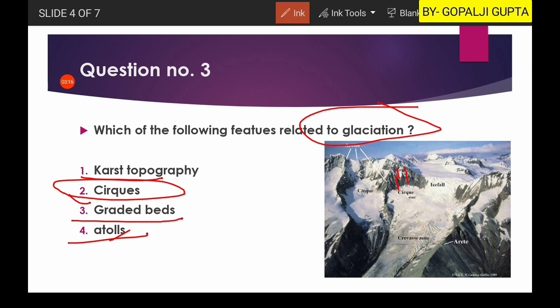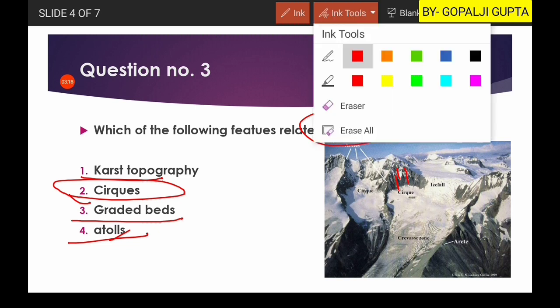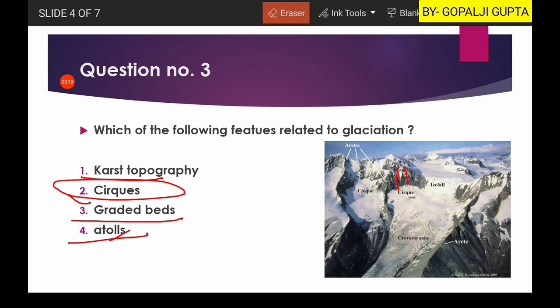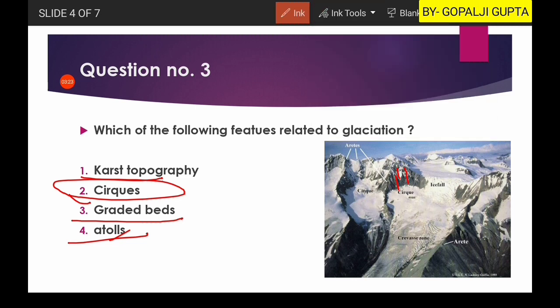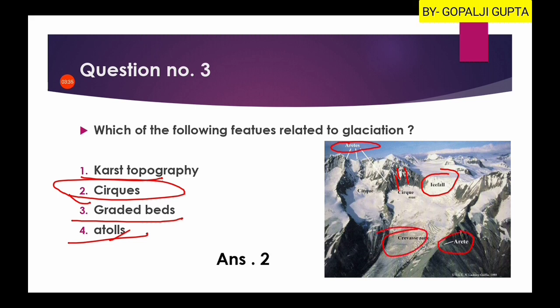You can also see other glacial features such as arêtes, which are the interconnection between two cirques, as well as icefalls and crevasse zones. So the second option — cirques — is the right answer.